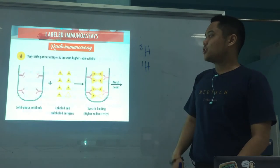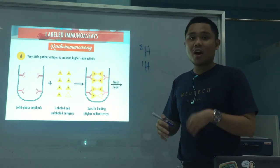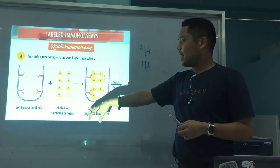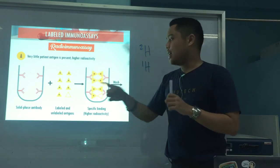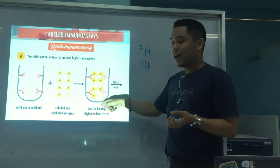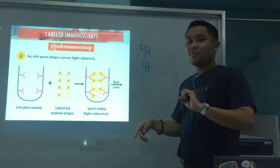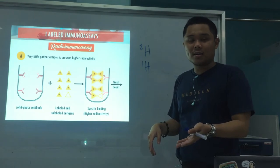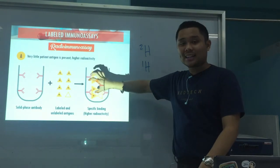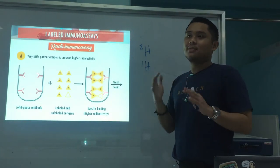For illustration: two scenarios. Scenario A — very little patient antigen is present, therefore higher radioactivity is detected. Why? Because with a solid-phase antibody, both labeled and unlabeled antigens compete to bind. When patient antigen is low, more radio-labeled antigen binds to the antibody. So more radioactivity is detected, meaning more radio-labeled antigen attached — therefore less patient antigen was present. That's indirectly proportional.